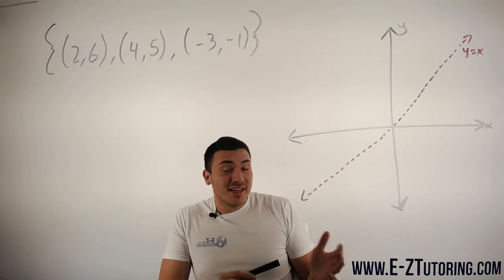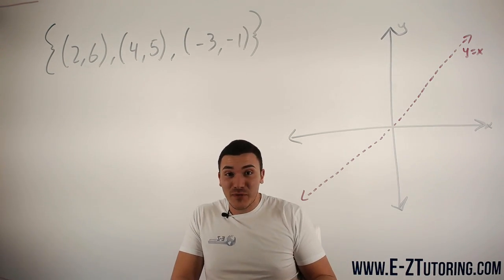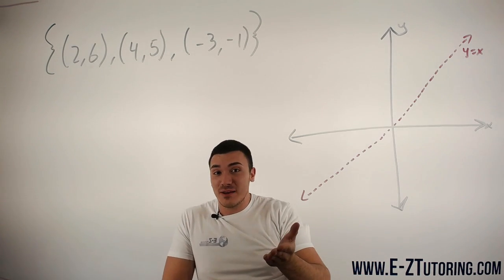Whenever you are finding the inverse of a function, pretty much all you're doing is reflecting it across the line y equals x.